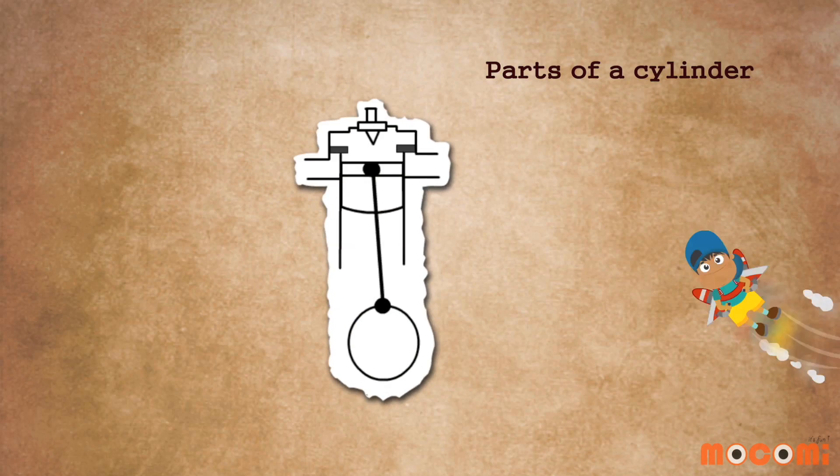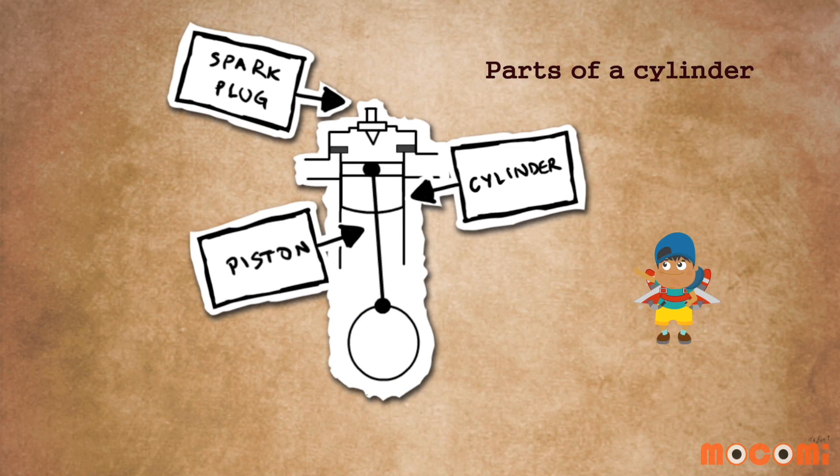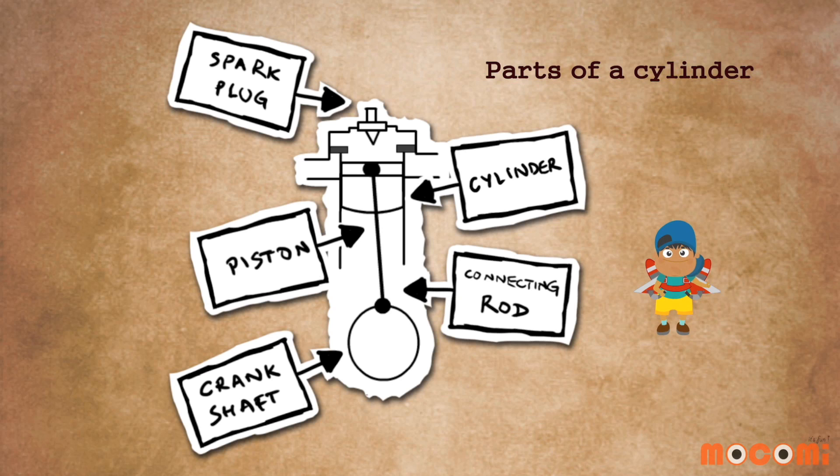Parts of a cylinder: spark plug, cylinder, piston, connecting rod and crankshaft.